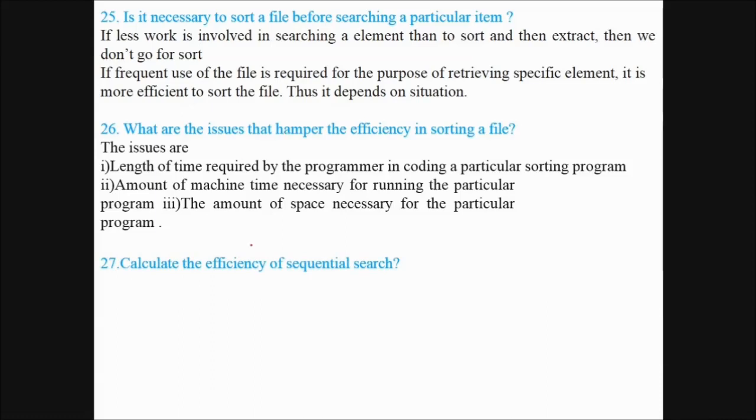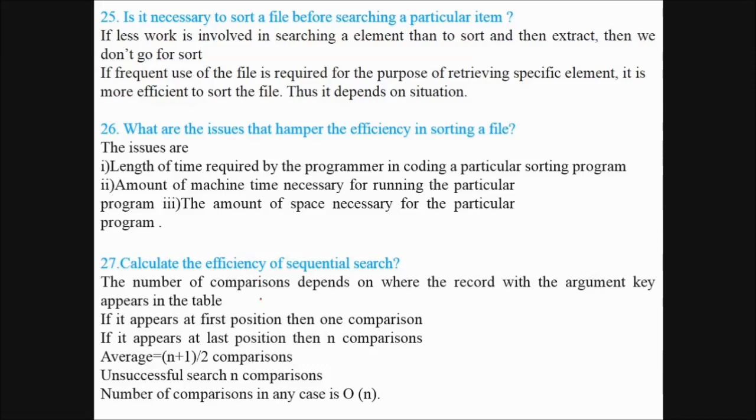Calculate the efficiency of sequential search. The number of comparisons depend on where the record with the argument key appears in the table. If it appears at the first position, then one comparison. If it appears at the last position, then n comparisons. Average is n plus 1 by 2 comparisons. Unsuccessful search is n comparisons. Number of comparisons is of order of n.